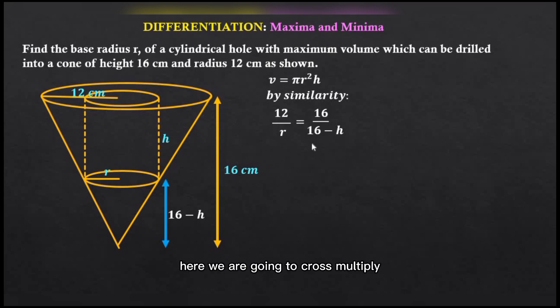Here we are going to cross multiply, so when we cross multiply we will have 192 - 12h = 16r. That is 12 by 16 is 192, 12 by negative h is negative 12h, and then on the right hand side we have 16 by r which is 16r.